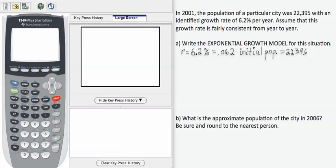So I know that the growth rate, R, is 6.2%. I'm going to write that as a decimal, dividing by 100 to get 0.062. The initial population is 22,395.